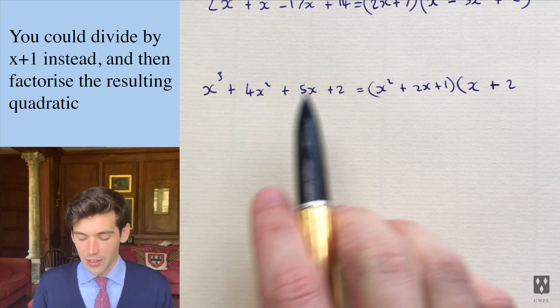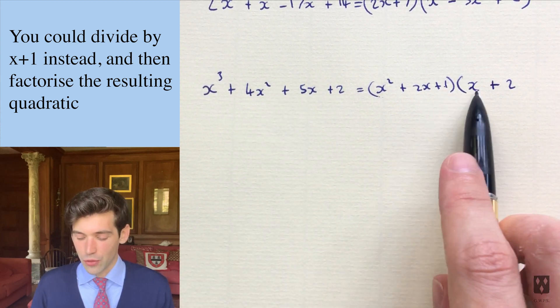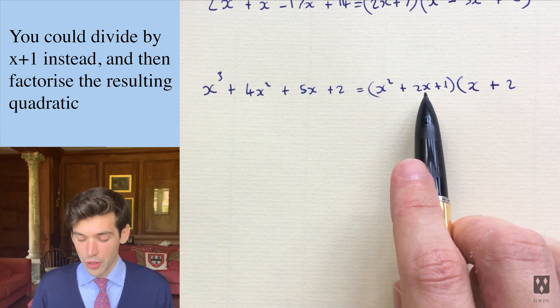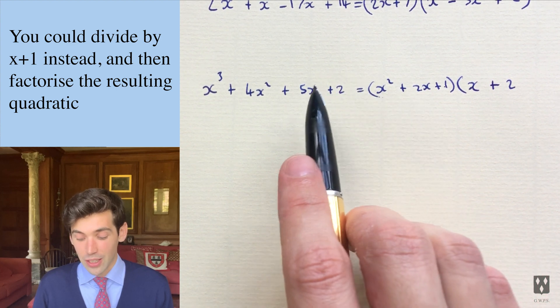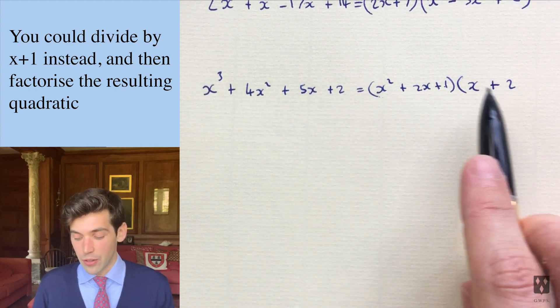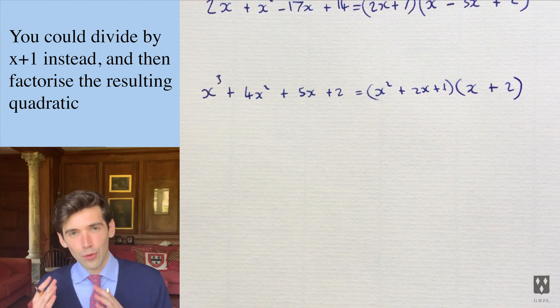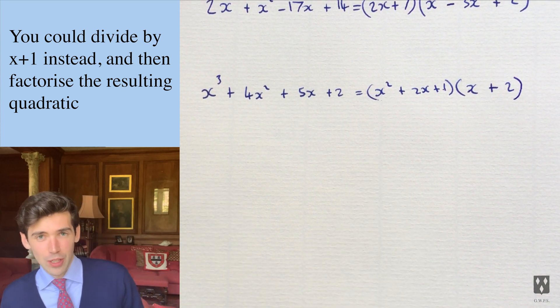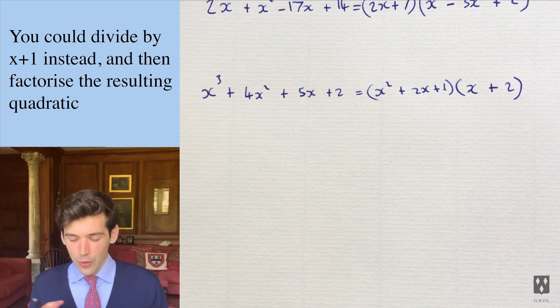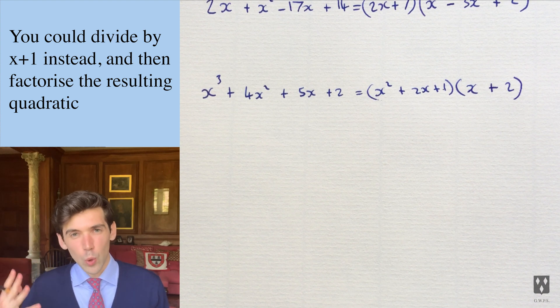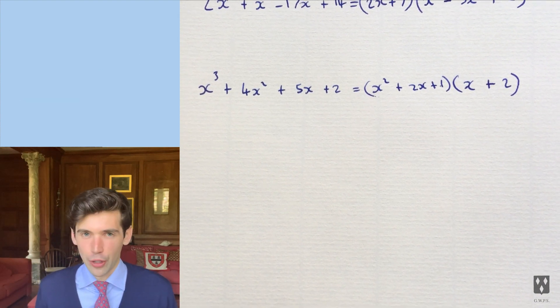And now let's look at the x terms. So we had an x from here, and we had 2 times 2x, which is 4x. So that does give us 5x. And then we had 2 times 1, that gives us 2. So actually, it's not too bad sometimes. It can work. But you've just got to deal with more terms to remember, which I'm not too keen on doing.